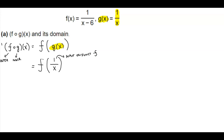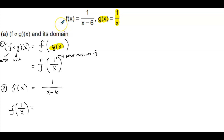Now 1 over x becomes the input on the function f. Since f of x is equal to 1 over x minus 6, we want to find f of 1 over x, where that represents the input. So we're going to replace x with 1 over x, and we end up with 1 over (1 over x) minus 6.